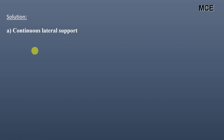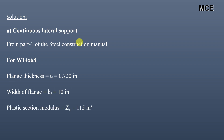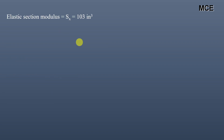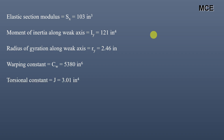Now coming back to the question. For Part A, the beam has continuous lateral support. First, we determine the properties of this steel shape from the Steel Construction Manual. For W14×68: flange thickness is 0.72 inch, width of flange is 10 inch, plastic section modulus ZX is 115 in³, elastic section modulus SX is 103 in³, moment of inertia along weak axis IY is 121 in⁴, radius of gyration along weak axis RY is 2.46 inch, warping constant CW is 5380 in⁶, torsional constant J is 3.0 in⁴, and distance between flange centroids HO is 13.3 inch.